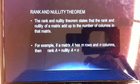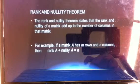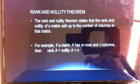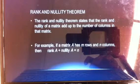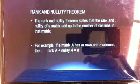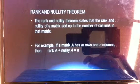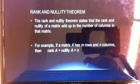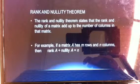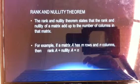For example, if a matrix A has m rows and n columns, then the rank plus the nullity is equal to the number of columns in that matrix. So, say we have a 4 by 4 matrix, m is 4 and n is 4, therefore the rank of the matrix plus the nullity of the matrix is going to equal 4.